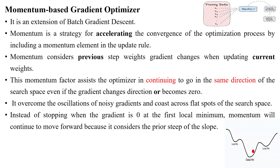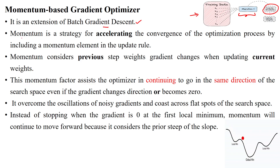The momentum-based gradient optimization method is an extension of batch gradient descent, which takes all the samples in the given dataset for each iteration, calculates the gradients, and then updates the parameters.